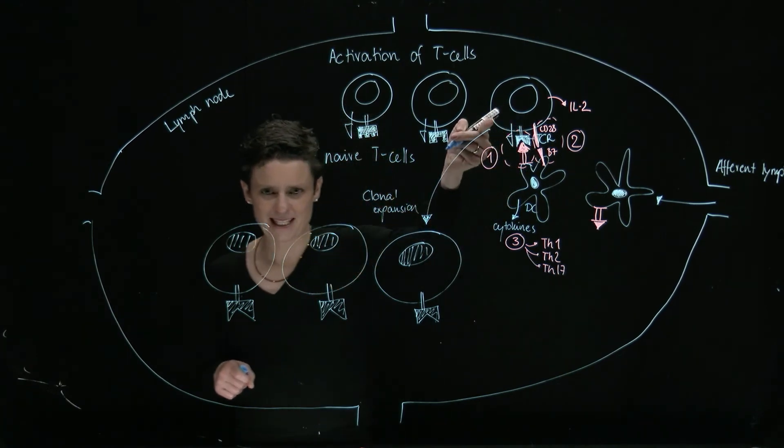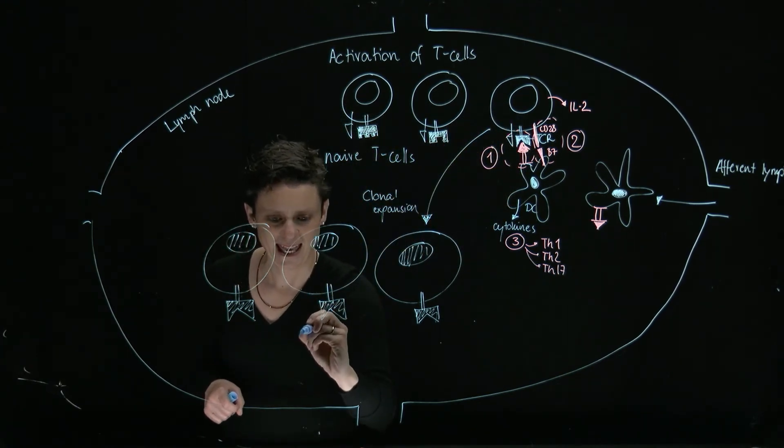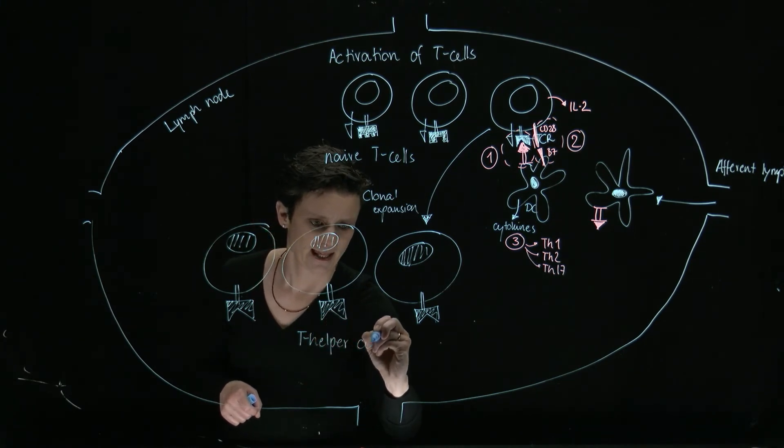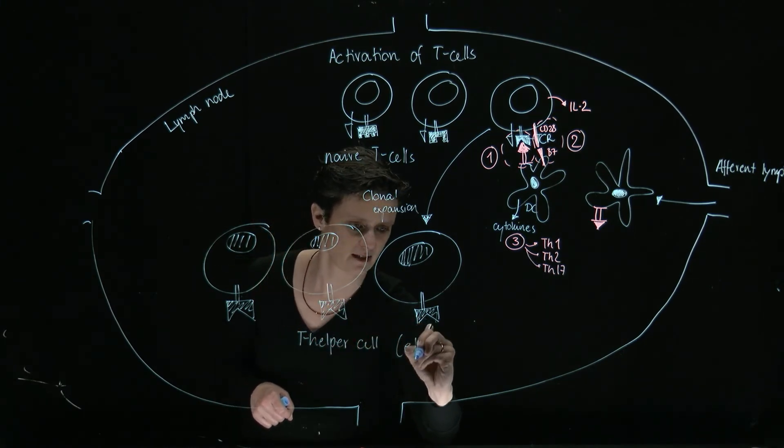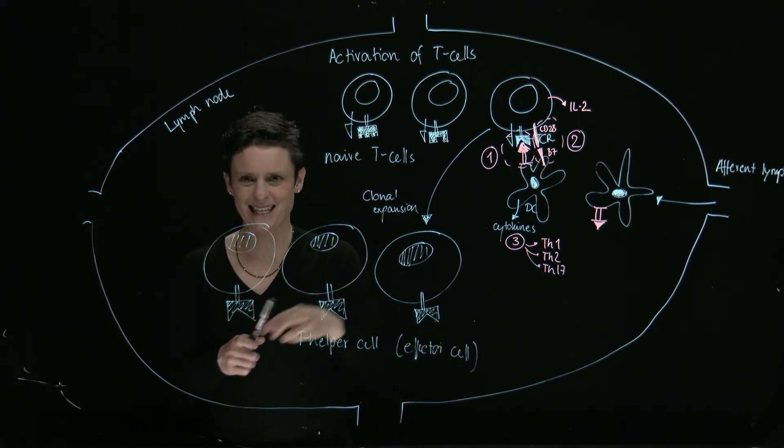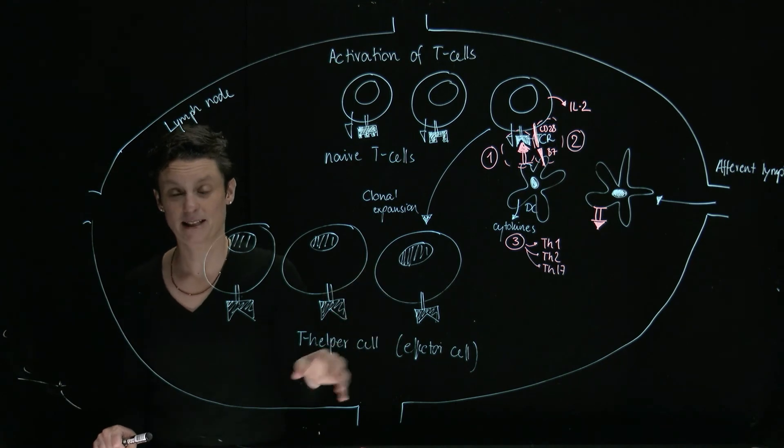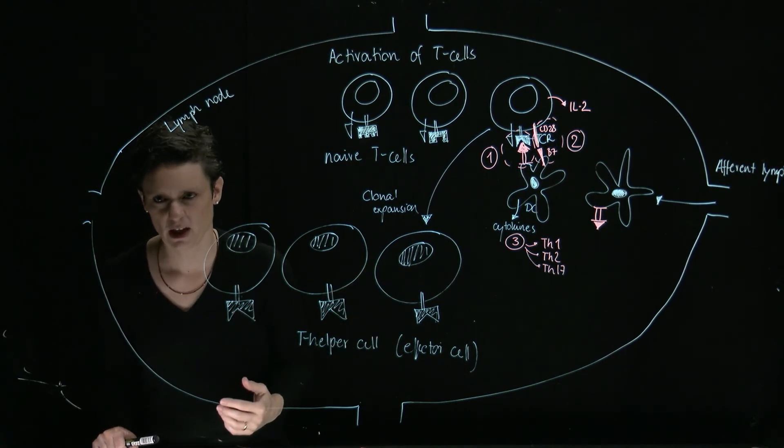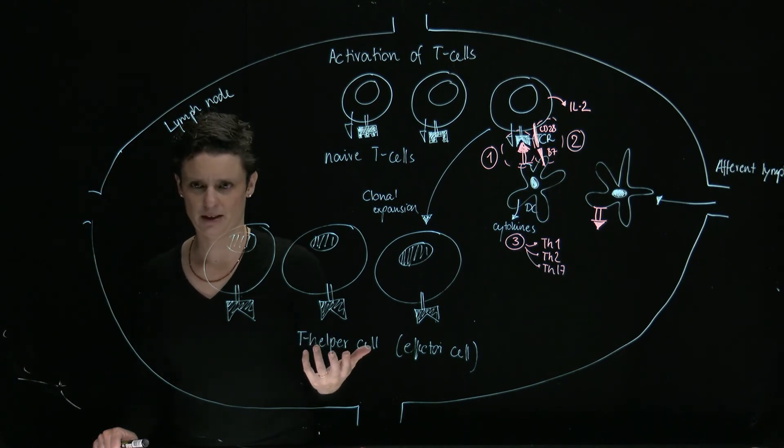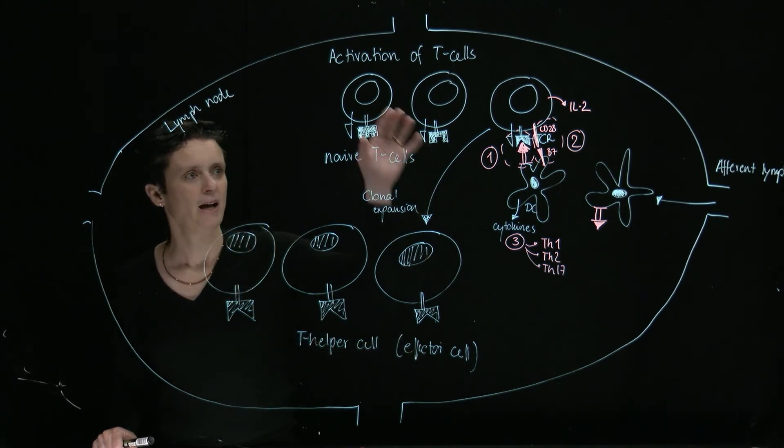And we made now from this naive T cell a T helper cell. That's an effector cell. That means that this cell, the T helper cell, can now really contribute to the immune response, can help us get rid of the infection.